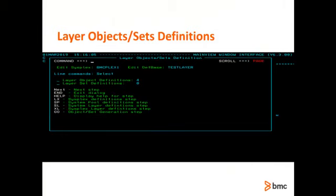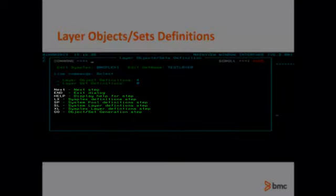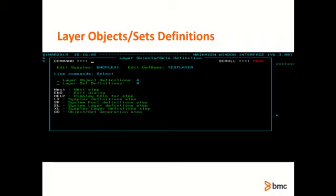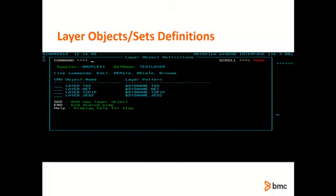The layer object dialog is the first in the wizard. I want to point out the jump commands at the bottom of the dialog. With these, users can move to any point in the wizard, skipping over those steps that they have already performed or do not wish or need to perform. Here are the layer objects that have been defined in the active definition base. At this point, you can add a new layer object, delete or edit an existing one, browse the definition, or repeat an existing object so as to create another.